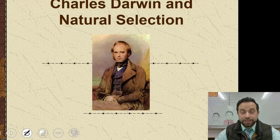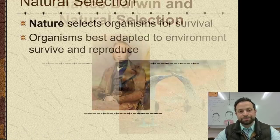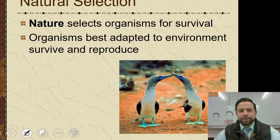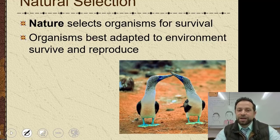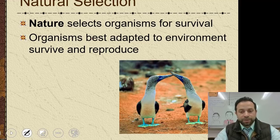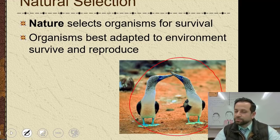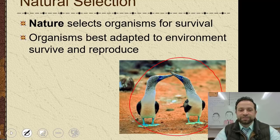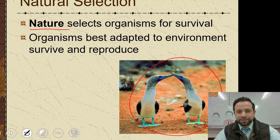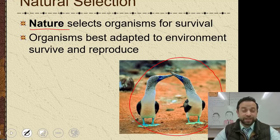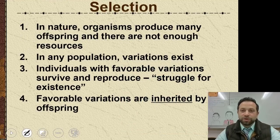Now here's Charles Darwin and his theory, which is what we call natural selection. Nature selects organisms for survival — the organisms that are best adapted to the environment survive and reproduce. Nature selects the organisms that are best adapted to that environment, whatever that environment might be. Here are four components of natural selection that are really important for us to know.